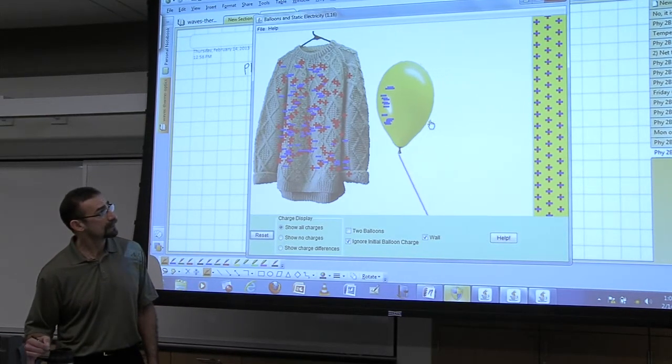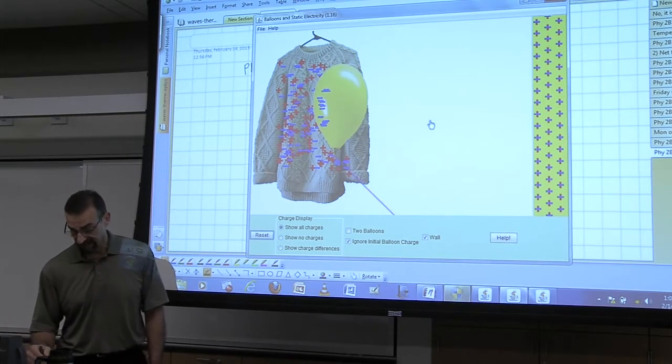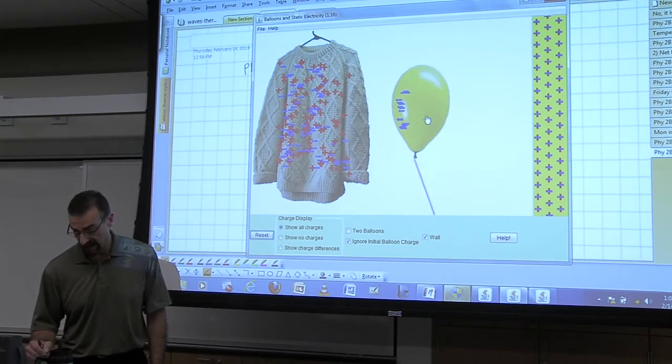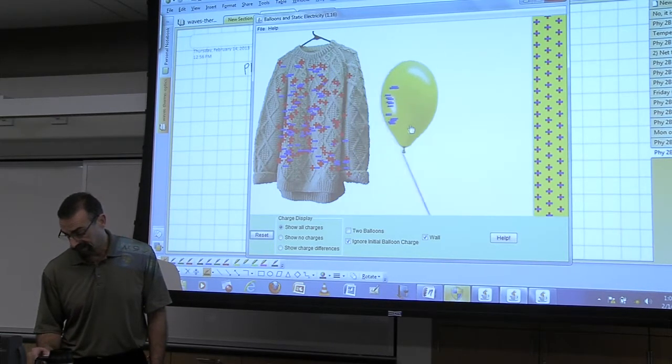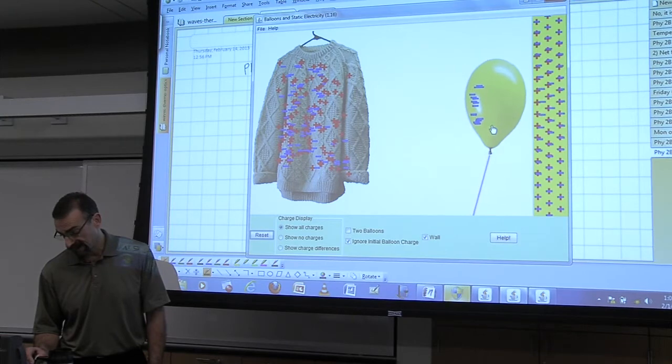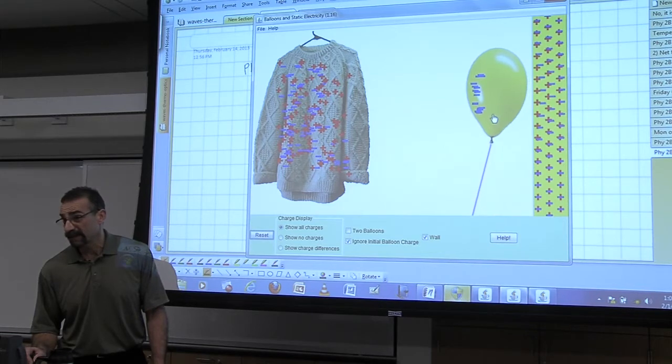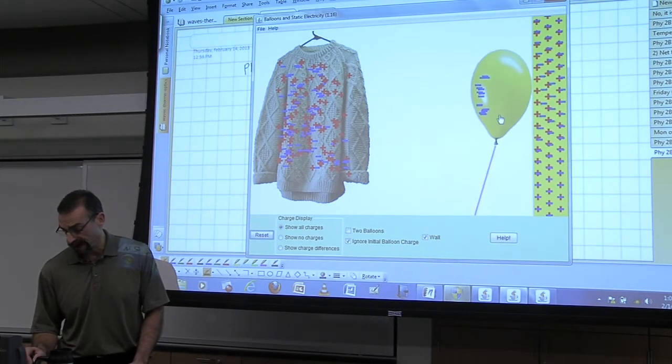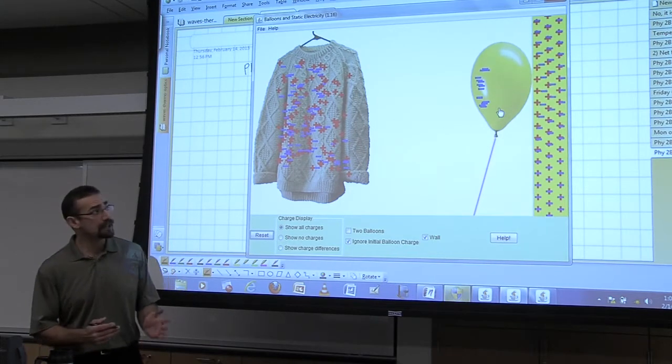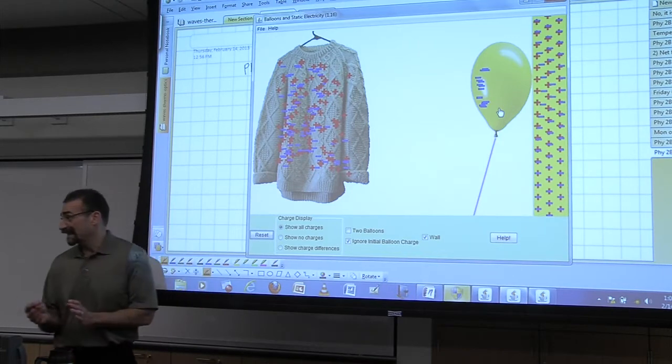We let go of the balloon. It wants to stick to that sweater, electrically attracted to the sweater. But if we bring it over to the wall, what happens? You see the electrons, the wall is not an electrical conductor, it's an insulator. So those electrons, they're tied to the atoms that they're with. They can't move around, but the electron cloud can shift a little bit and the surface becomes slightly positive.